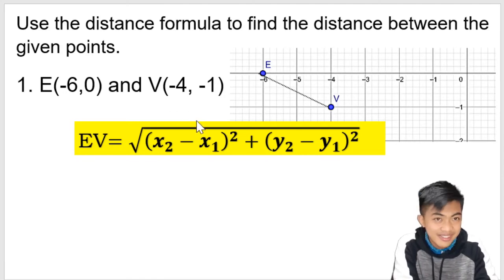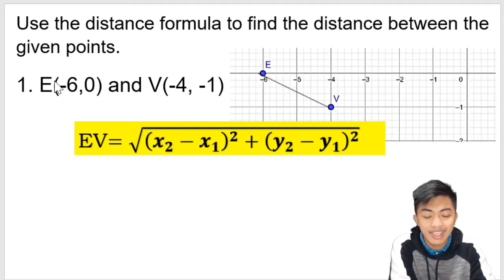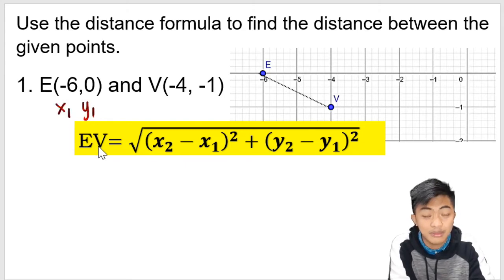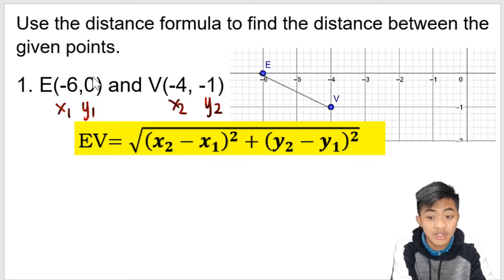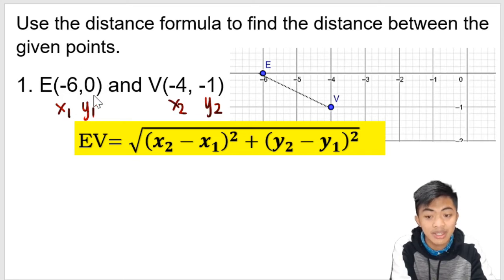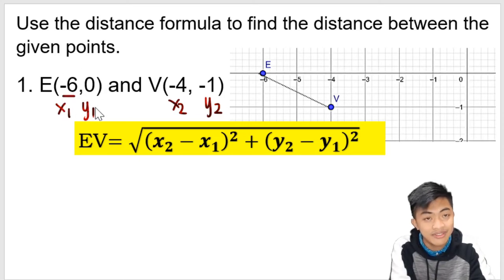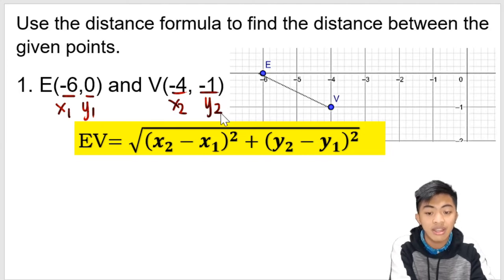So this is the distance formula. How do we substitute the coordinates? First, we assign the x's and the y's. We take any ordered pair and assign it x₁ and y₁, and the other one we assign x₂ and y₂. Note that x₁ and y₁ must be from the same ordered pair — x₁ and y₂ cannot be partnered together or you will get a wrong answer. So our x₁ is −6, y₁ is 0, x₂ is −4, and y₂ is −1.